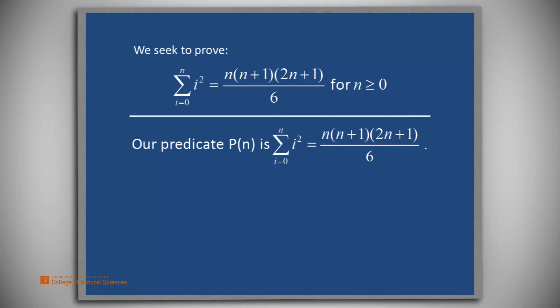An inductive proof must begin with a base case, and we see that we're trying to prove this for integer values of n greater than or equal to 0. Therefore, the base case should be n equals 0.